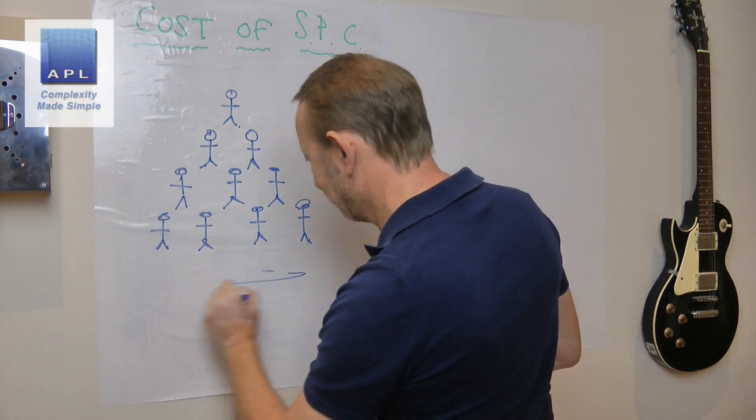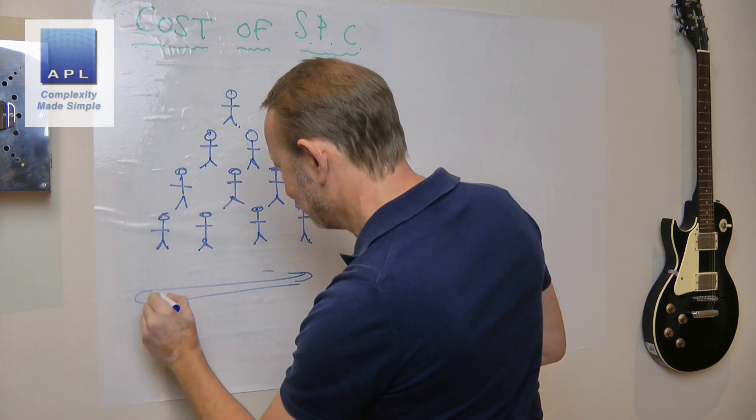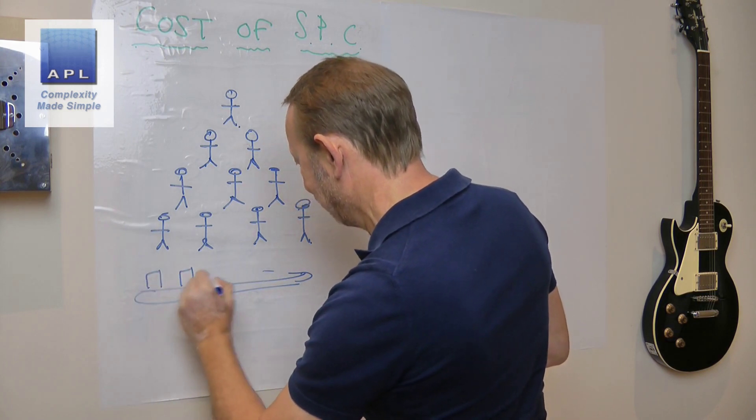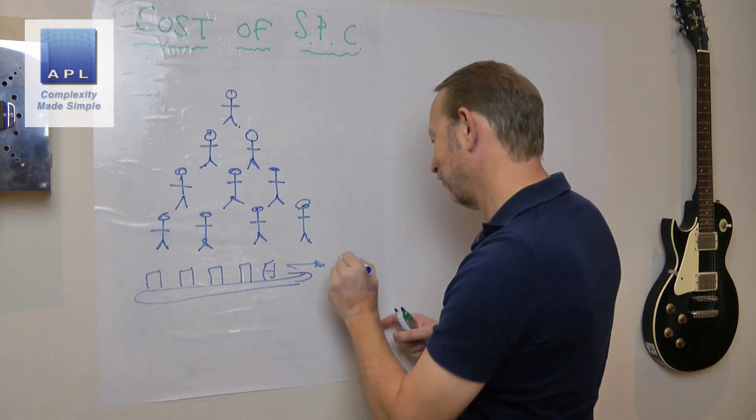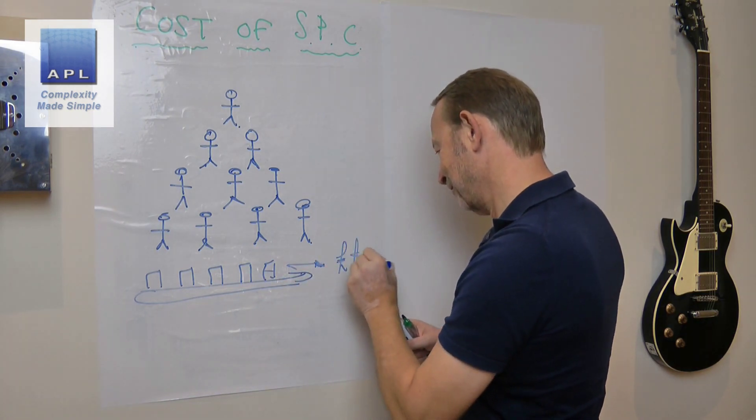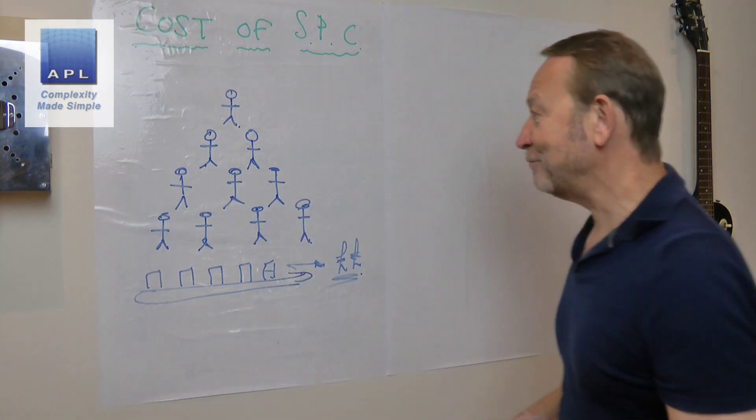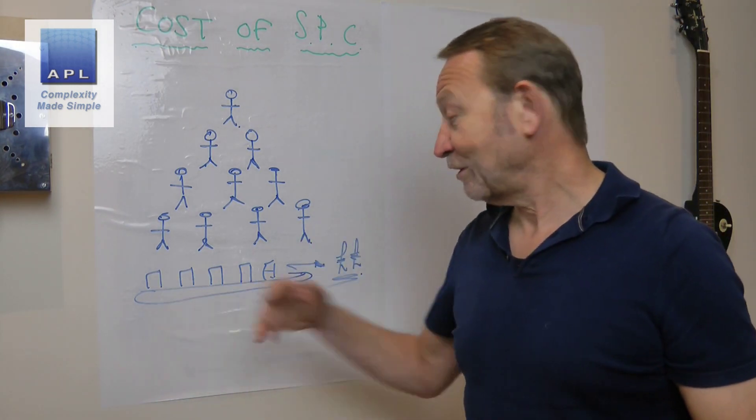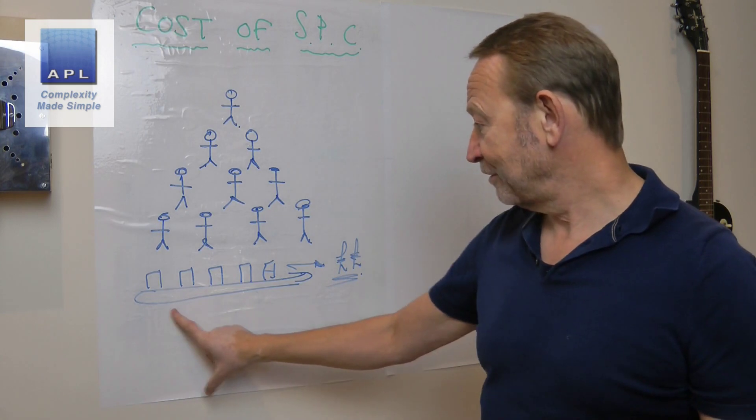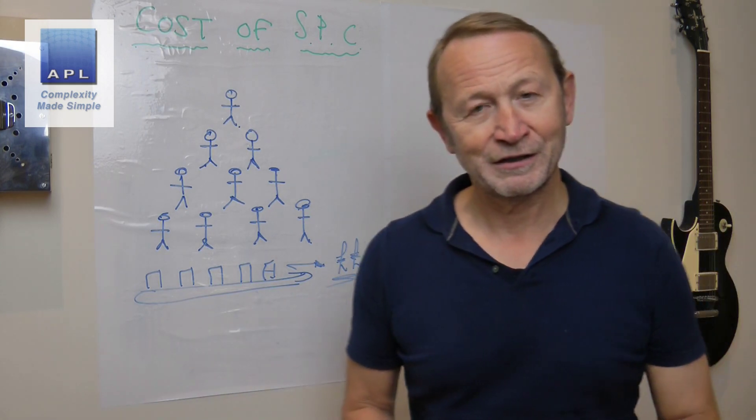And then, of course, down at the bottom what we've actually got is the people that make money. We have the money makers, the people that stand at the production line every day.